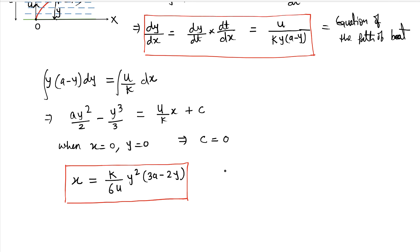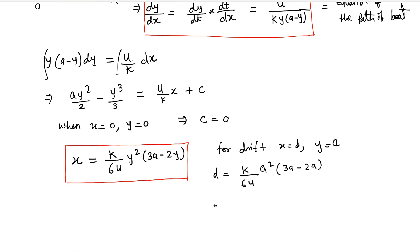Now, we need to find the drift. So for drift, x equals d, y would be a. Right. So therefore, we can get d equals K/6u times a² times (3a minus 2a). Therefore, d equals Ka³/6u. So this is the drift.